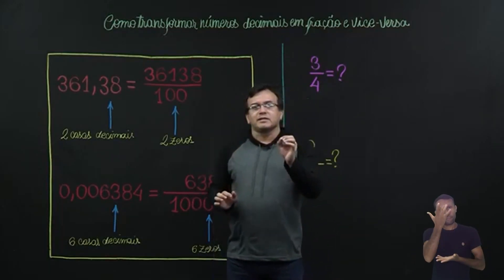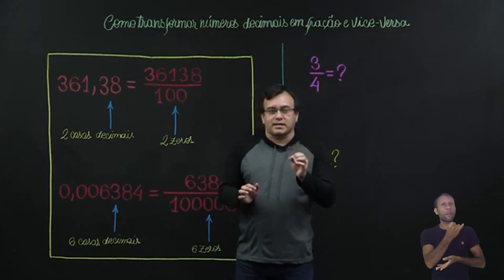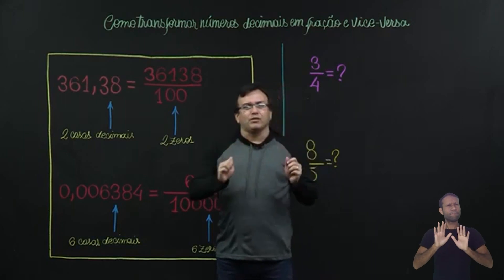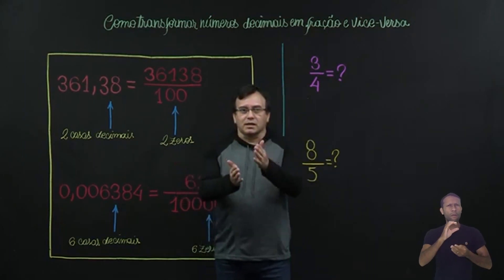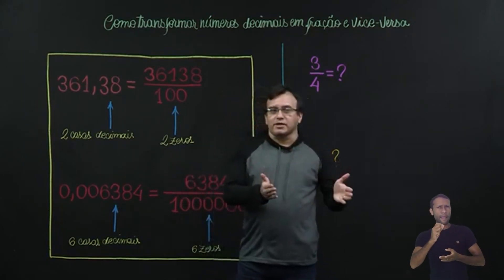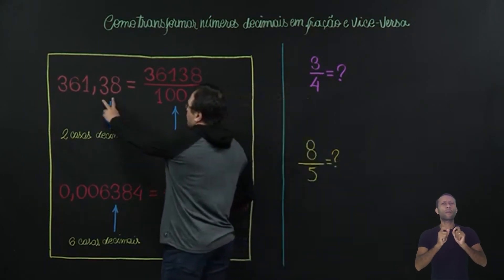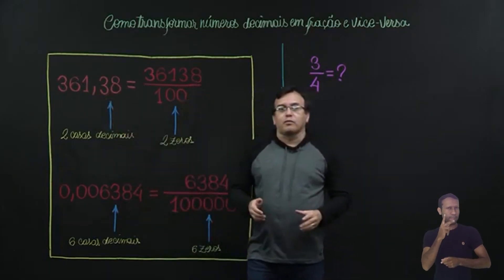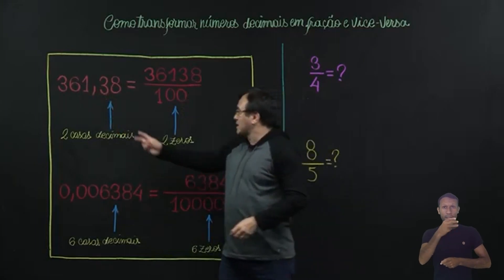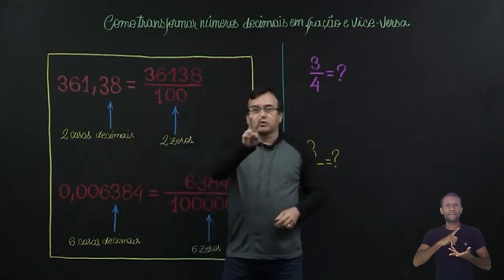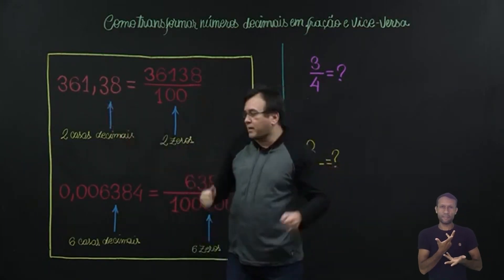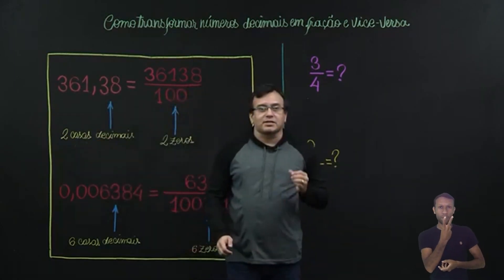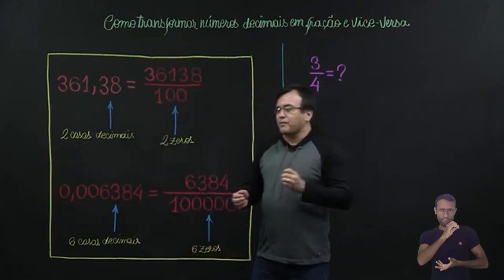Simples. É só você verificar quantas casas decimais existem após a vírgula. O que é casa decimal? São os seus algarismos. Então aqui a gente identifica que, após a vírgula, nós temos o 38 como parte decimal. E esse 38 é formado por dois algarismos. Automaticamente, esse 38 equivale a duas casas decimais.